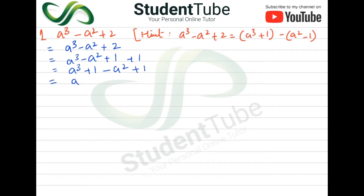So we can do it like this: write a³ plus 1 in a bracket, then below minus. Taking a² common from a² minus 1, because we have a² common. Then it is minus plus minus, so it becomes minus 1.